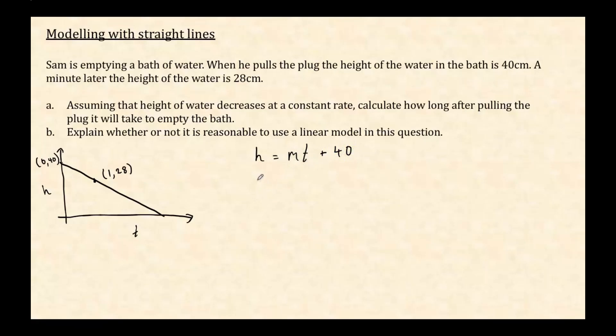Well, we can use our rise over run formula for that. So that's change in y divided by change in x. So the change in y, that's going to be the difference between these two y values. So that's 28 minus 40. And the change in x is the difference between these x values, the difference between 1 and 0. So that's 1 minus 0. So that gives me negative 12 over 1, which is negative 12. So I now know that my gradient is negative 12. So now I've got my equation, h is negative 12t plus 40.